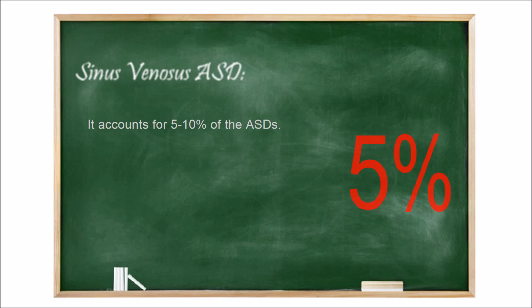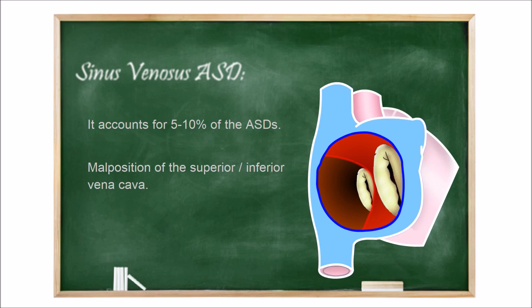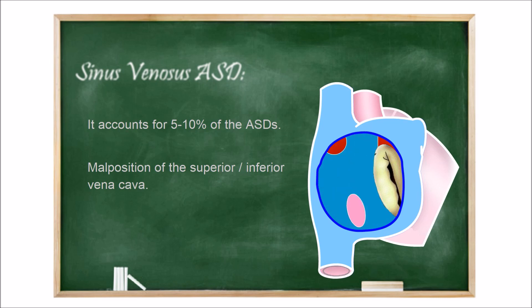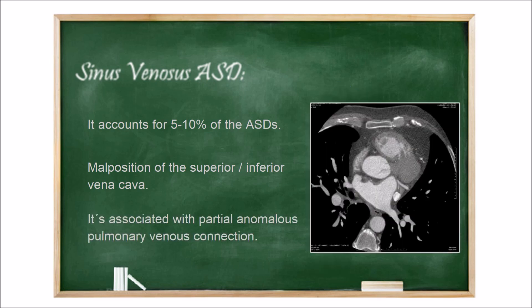Sinus venosus atrial septal defects account for 5 to 10% of atrial septal defects, and they are characterized by malpositioning of the insertion of the superior or inferior vena cava. The interatrial communication is within the orifice of the overriding vein and is outside the area of the fossa ovalis. It is more frequent in the superior vena cava, and it is usually accompanied by partial anomalous pulmonary venous connection.